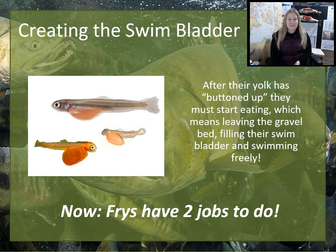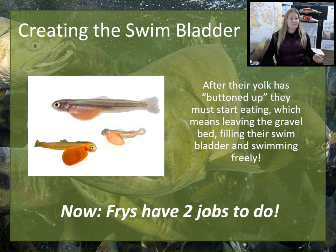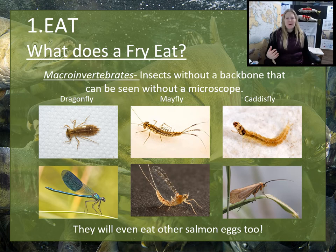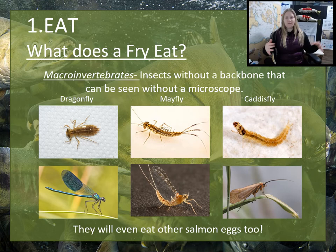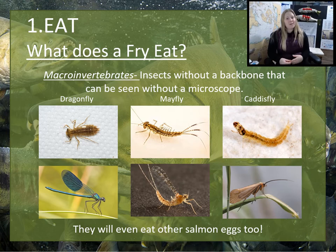Fry have two main jobs. Their first job is to eat. They love to eat macroinvertebrates — insects that live in the stream with the fish. These insects don't have a backbone but are big enough to be seen without a microscope. Salmon eat the larval forms of these insects as well as the flying adult forms, just like a caterpillar is the larval form of a butterfly and the flying version is the adult. Salmon love to eat dragonflies, mayflies, caddisflies, and other salmon eggs.